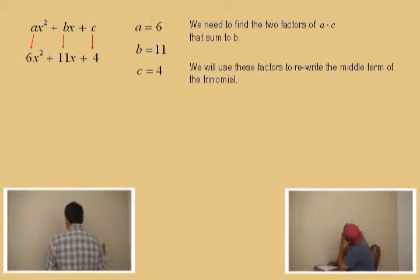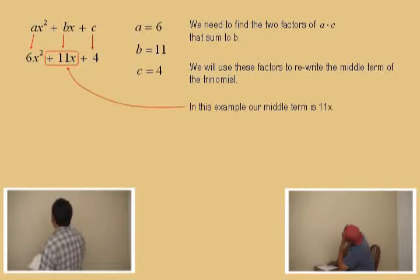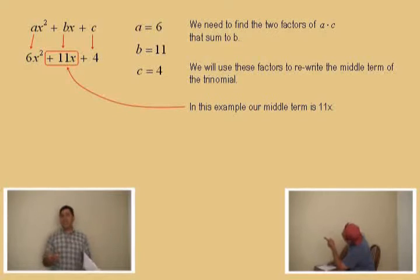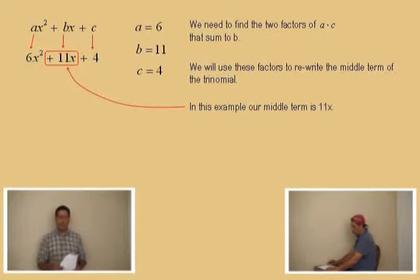And then, what we are going to do, we will use these factors here to rewrite the middle term. Now, that middle term is the plus 11x. Now, there are different ways to write plus 11x using two terms. You could write plus 10x plus 1, that's 11x. Or you could use plus 9x plus 2x, that's 11x. Or plus 8x plus 3x, right?